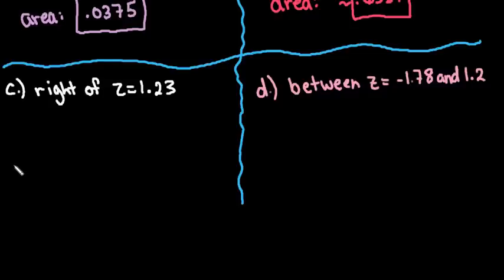So for this one to find the area to the right of Z equals 1.23 we're going to draw our curve and then this time because of the fact that we have 1.23, it's a little bit more than one standard deviation above, and so we would go ahead and shade this but this time we're looking for the area to the right.